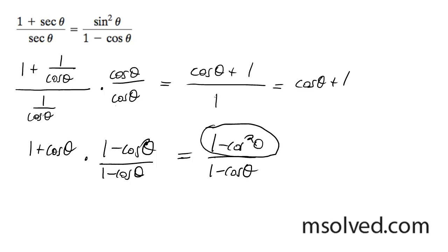Using the Pythagorean identity sine squared theta plus cosine squared theta equals 1, we know 1 minus cosine squared theta equals sine squared theta. And this becomes sine squared theta all over 1 minus cosine theta. That's it.